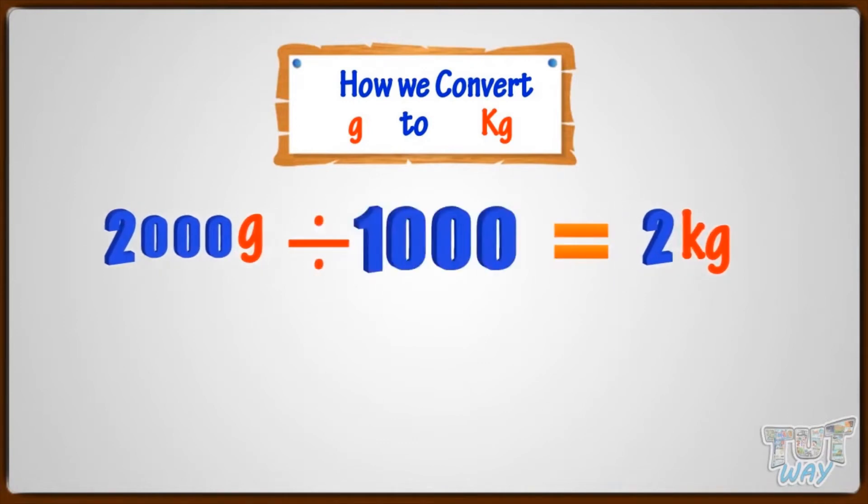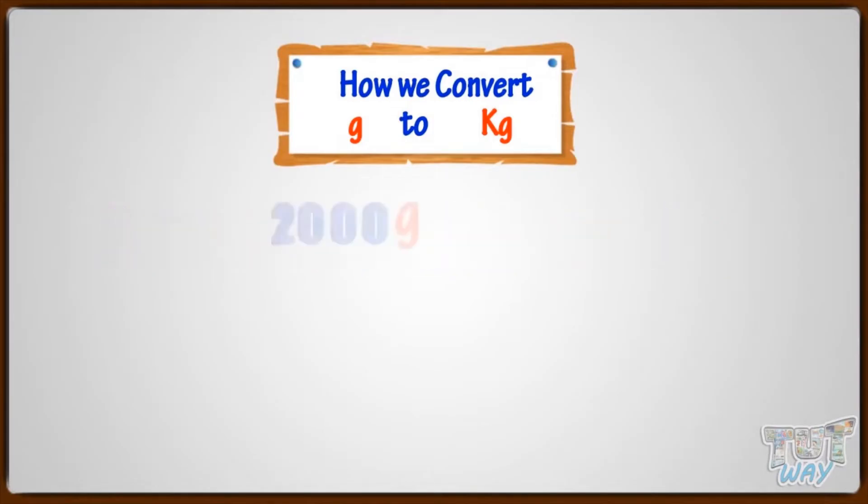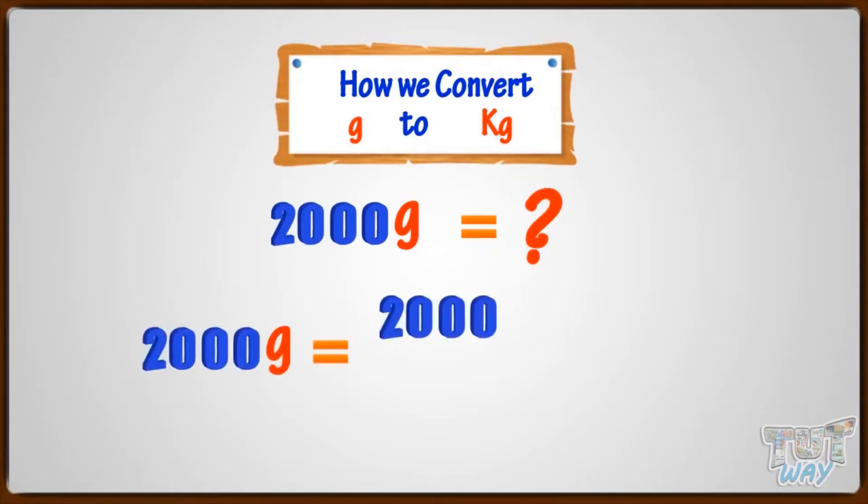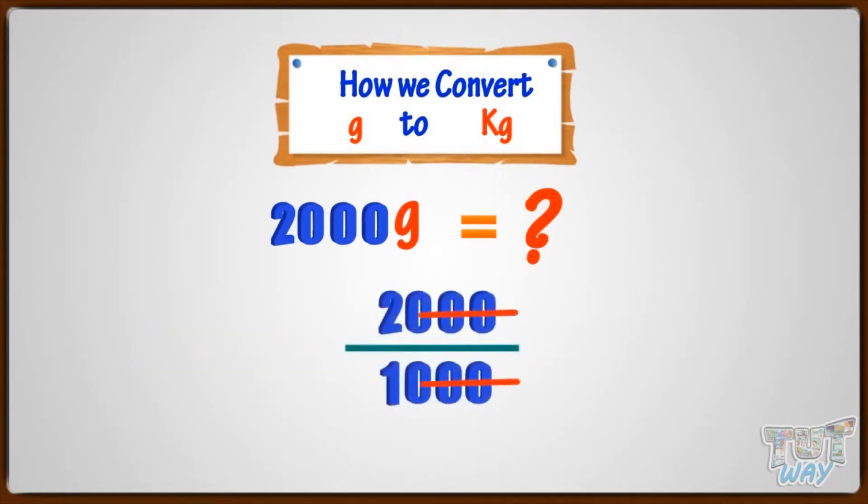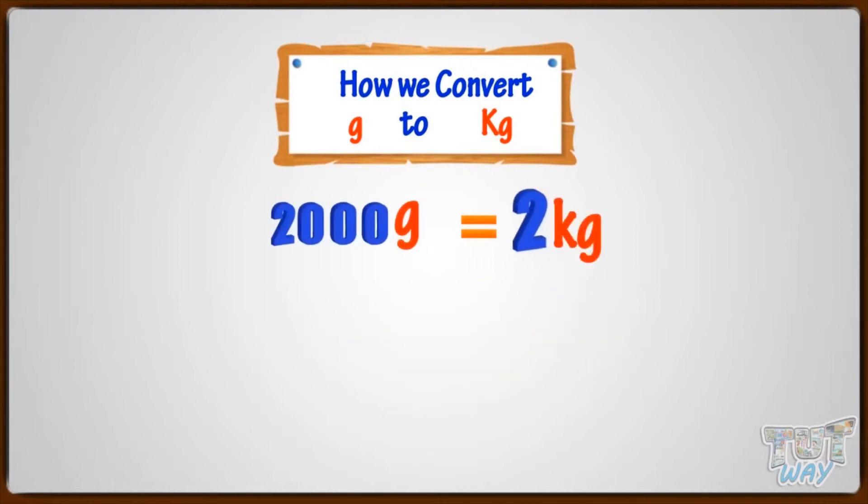That is, we will divide by 1,000 to convert grams to kilograms. 2,000 grams is equal to how many kilograms? 2,000 grams equals 2,000 divided by 1,000 kilograms. Cutting three zeros, we get 2 by 1, which is equal to 2. So, 2,000 grams equals 2 kilograms.